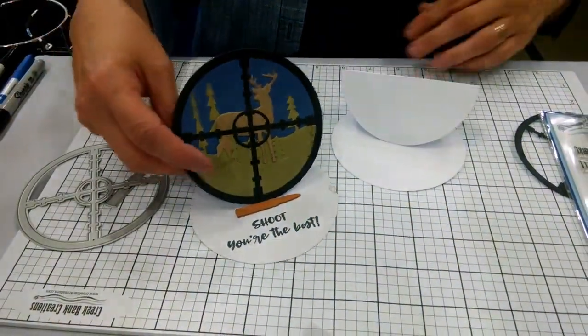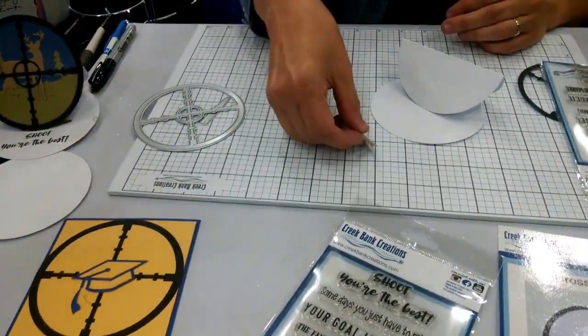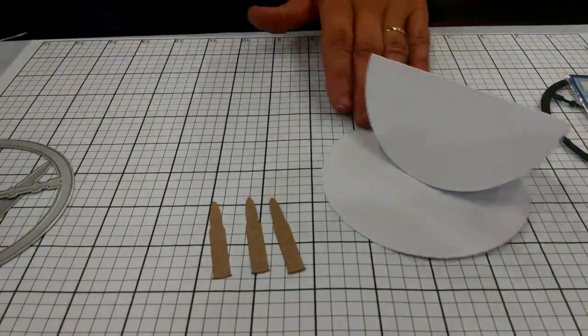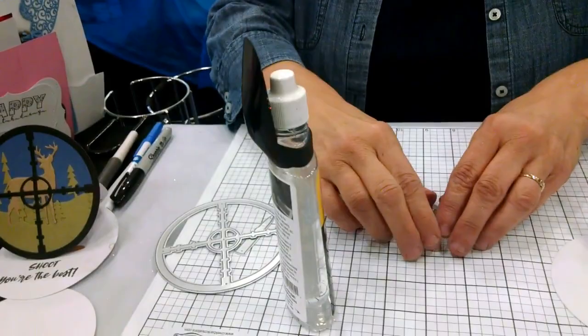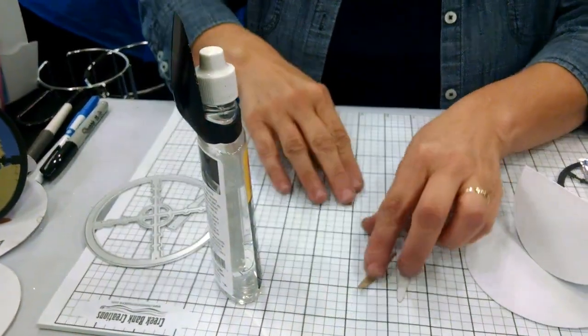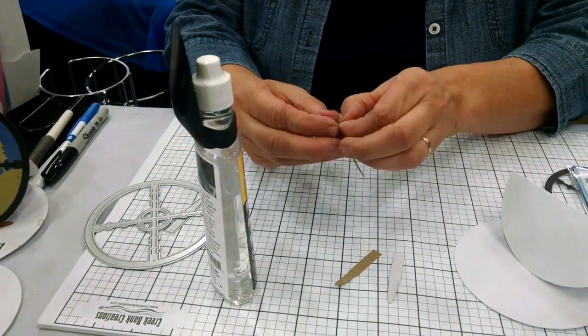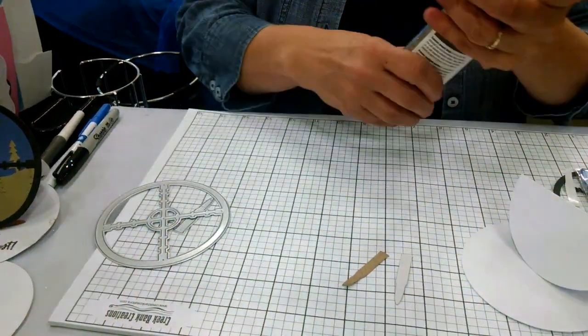Okay, so now what we need is to put that bullet on our card. I have cut the bullets ahead of time, I cut three bullets, and I have my super tacky tape on the back. What we're gonna do is take the first bullet and pull the tape off the back and we're gonna layer the bullets up one on top of the other.